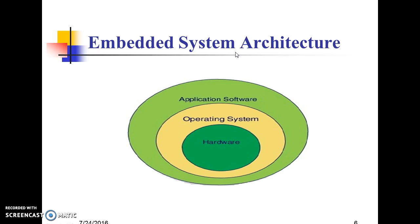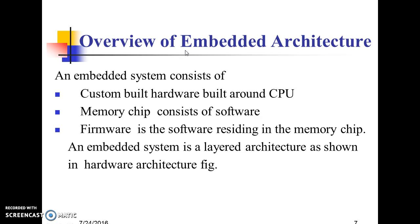Embedded System Architecture consists of hardware, operating system, and application software. The embedded system consists of custom-built hardware built around a CPU. A memory chip contains software; firmware is the software residing in the memory chip. The embedded system is a layered architecture, as shown in the hardware architecture figure.